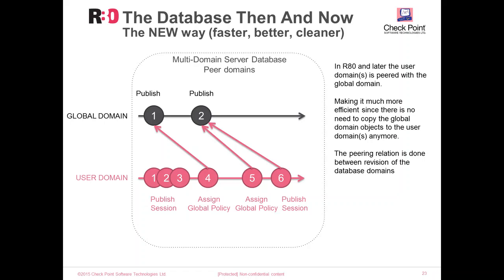We just need to create a pairing relation done between revisions of the database domain. For example, a user domain where multiple publish operations took us to revision number three. The assigned global policy operation created revision number four on the user domain and paired it to revision number one of the global domain. The publish which created revision number two on the global domain was not visible on the user domain until the reassigned global policy operation was executed, updating the user domain to revision number two of the global domain.